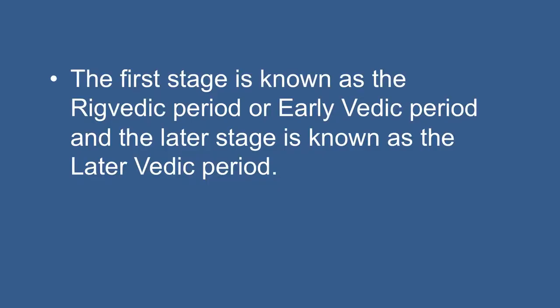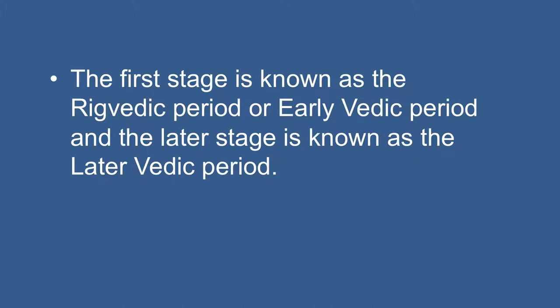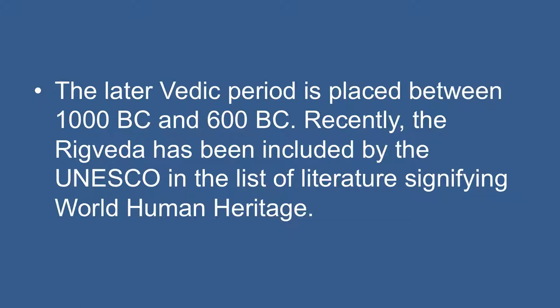Careful studies have shown that the Vedic texts reflect two stages of development in terms of literature as well as social and cultural evolution. The Rig Veda, which is the oldest text, reflects one stage of social and cultural development whereas the other three Vedas reflect another stage. The first stage is known as the Rig Vedic period or early Vedic period, and the later stage is known as the later Vedic period. The early Vedic period corresponds with the date of composition of the Rig Vedic hymns, fixed between 1500 BC and 1000 BC. The later Vedic period is placed between 1000 BC and 600 BC. Recently, the Rig Veda has been included by UNESCO in the list of literature signifying world human heritage.